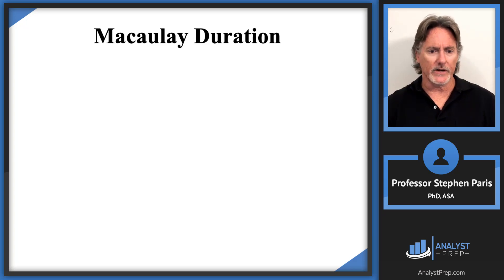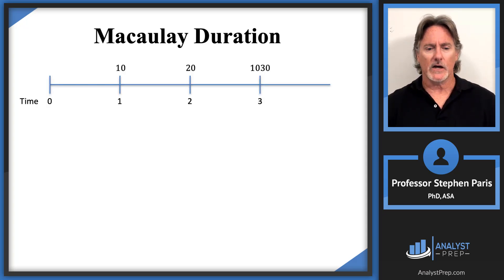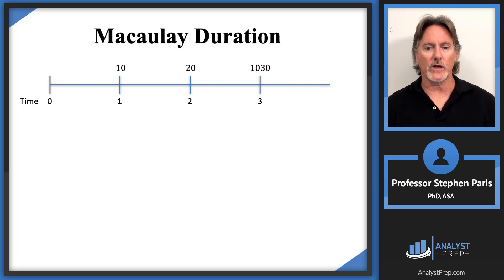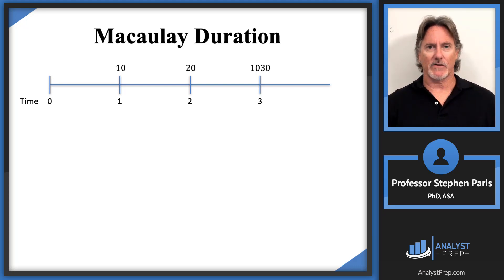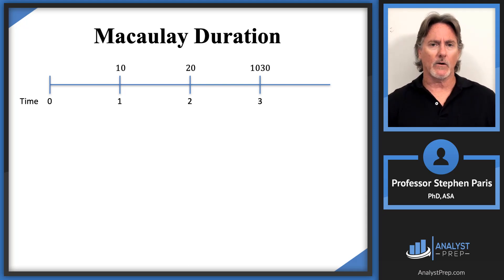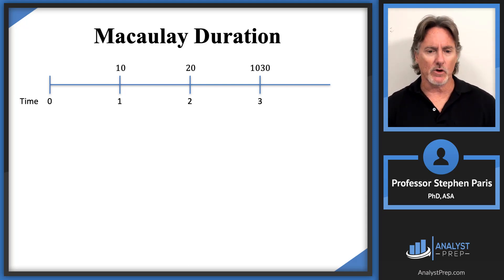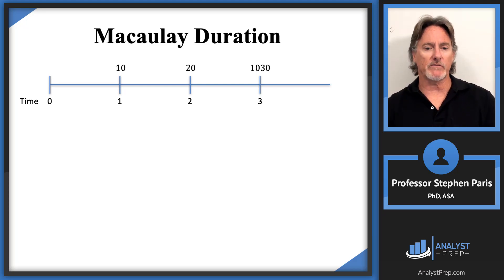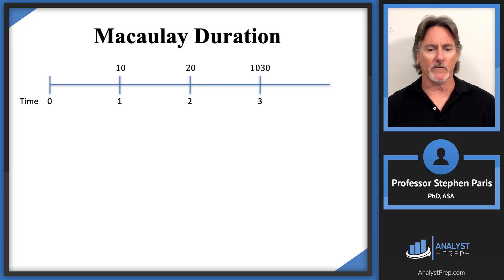For Macaulay duration, let's set it up with an example. Suppose we have a timeline where at time 1 you have a payment of 10, at time 2 a payment of 20, and at time 3 a payment of 1,030. I'm thinking of this in the context of a bond — the coupon at time 1 is 10, at time 2 is 20, at time 3 is 30, plus a redemption value of 1,000, giving a total payment of 1,030 at time 3.